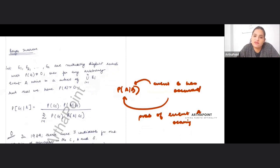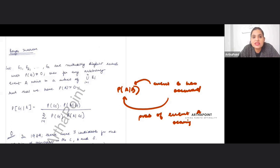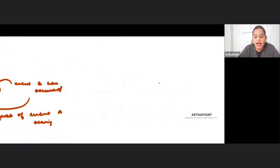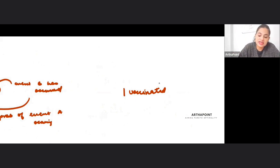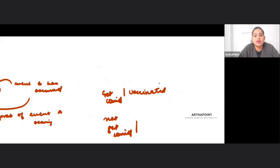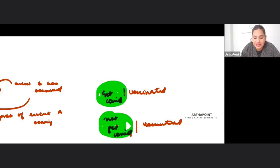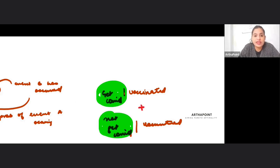In Bayes' theorem, there are many such events — event A, event C, event B — which have to occur after event B has occurred. The key point is that these events are mutually disjoint; they don't have anything in common. For example, given that I have got myself vaccinated, there are two mutually disjoint events: either I can get COVID or I cannot get COVID.